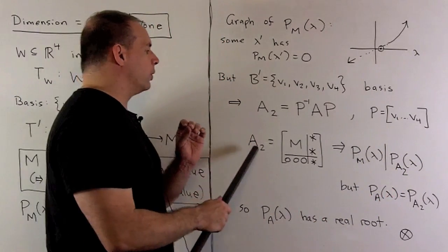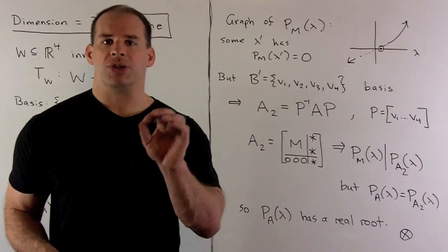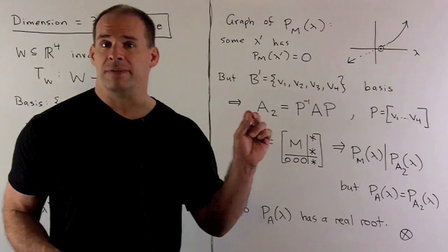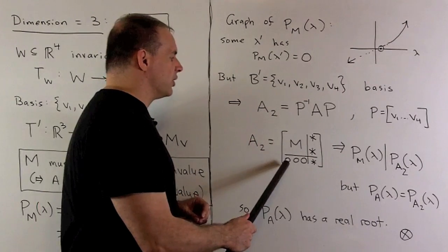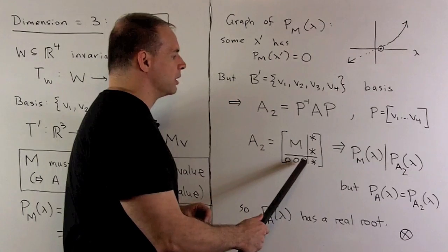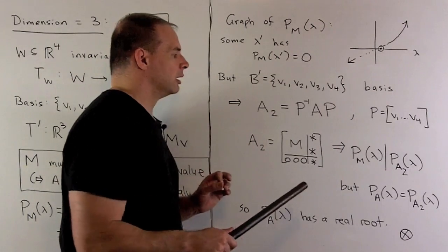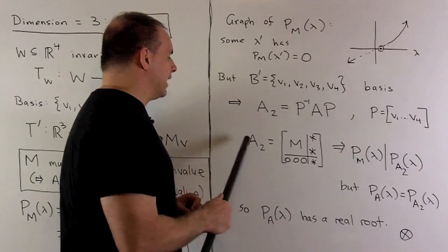You'll note for A₂, well, W is invariant. So, V₁ is going to go to a linear combination of V₁ through V₃. Coefficient of V₄ is going to be zero. So, for this column, it's going to end in zero. Similar for the second and third columns. For the fourth column, we won't have any information.